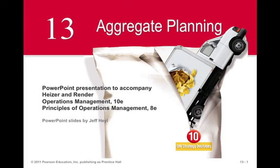Aggregate planning is different from detailed planning in that its planning horizon tends to be medium term. We look at the products we're producing or services we're delivering in an aggregate sense — combining various product categories into aggregated groups — which helps to reduce the level of detail and improve planning accuracy.